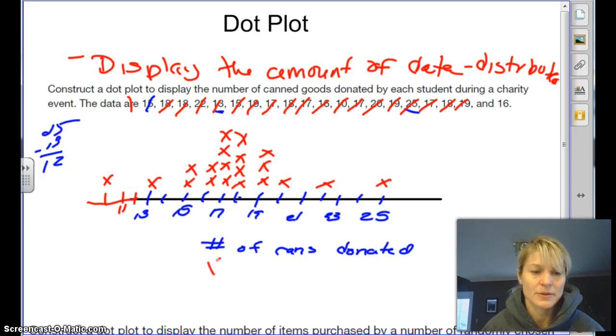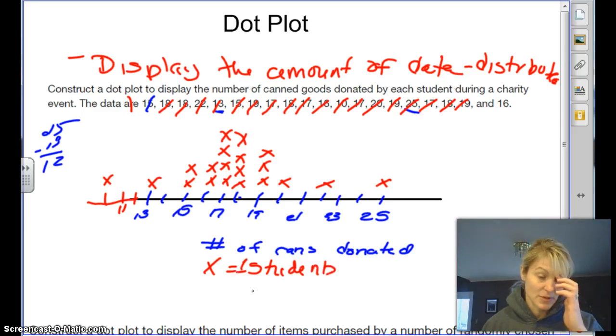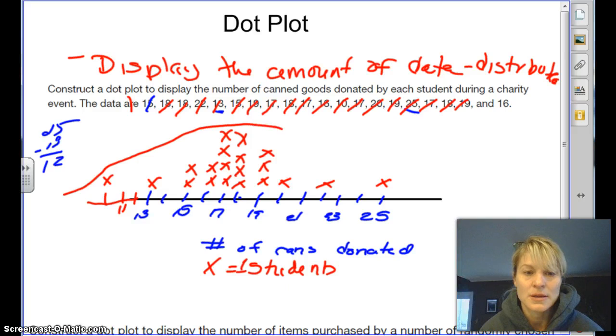Then we want to look at how the data is distributed. We might want to make a little key here. I'm thinking about students, one student really, right? So x is one student. To decide how things are distributed, we want to sort of make kind of like a drawing around the whole thing like this. There we go. Could have done a little better with that one.